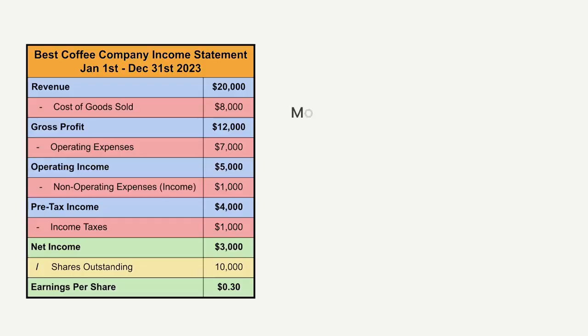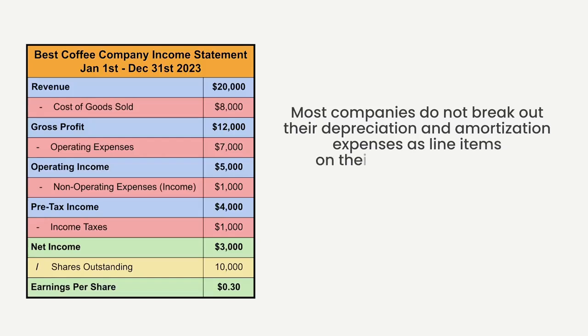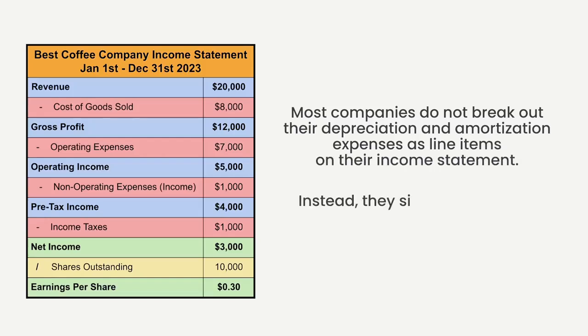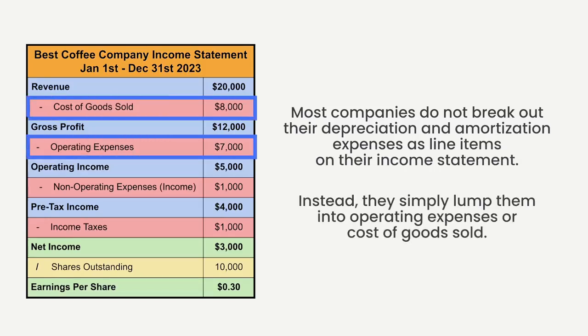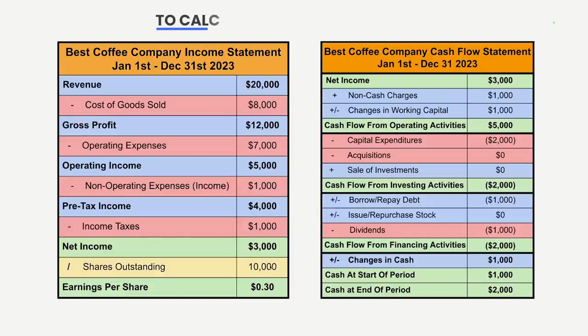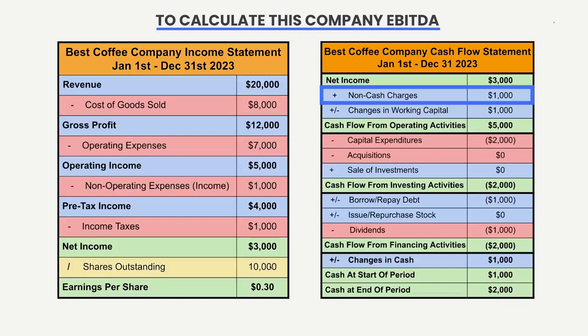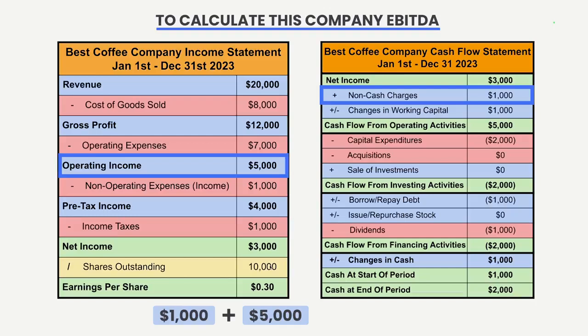Now, while these assets do lose value, they don't cost the company cash when they do so — that makes them non-cash charges. However, most companies do not break out their depreciation and amortization expenses as line items on their income statement. Instead, they lump them into operating expenses or cost of goods sold. All of a company's non-cash charges are called out on the cash flow statement. So to calculate this company's EBITDA, we take its D&A of $1,000 and add that to its EBIT of $5,000, giving an EBITDA of $6,000.